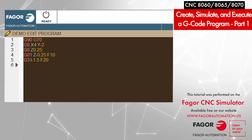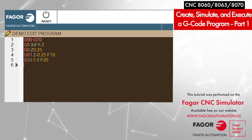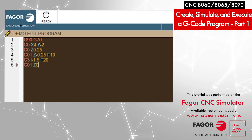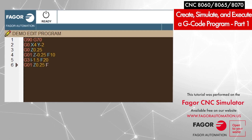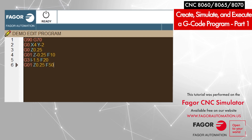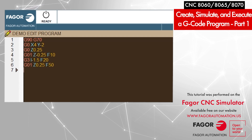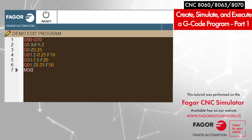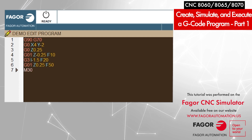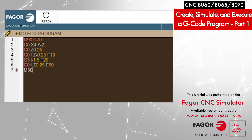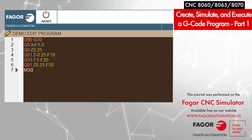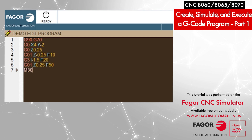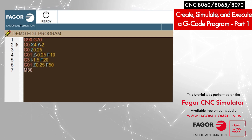After the circle is complete, I move the tool out by programming G01 Z0.25 at a feed rate of 50. Then I end the program with M30. Since I haven't added a tool yet, I go back to the top of the program to add the tool number I want to use.